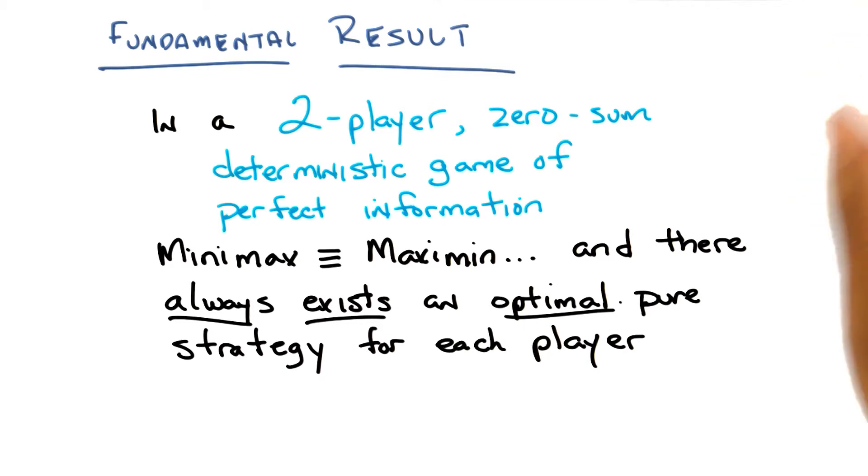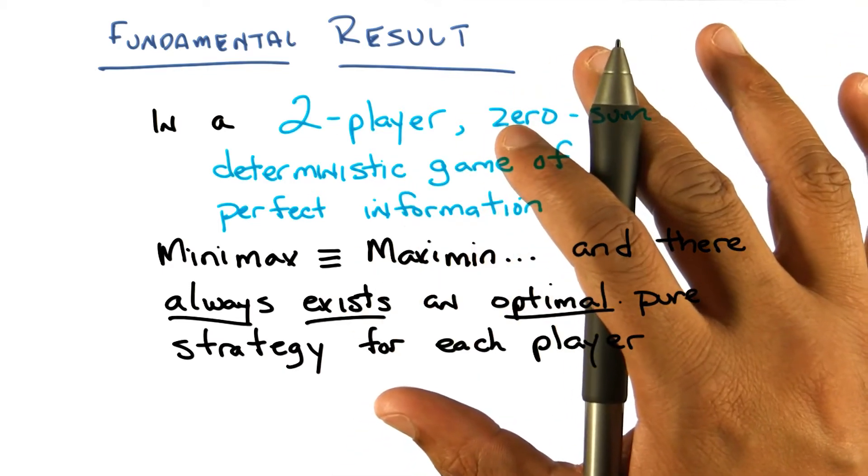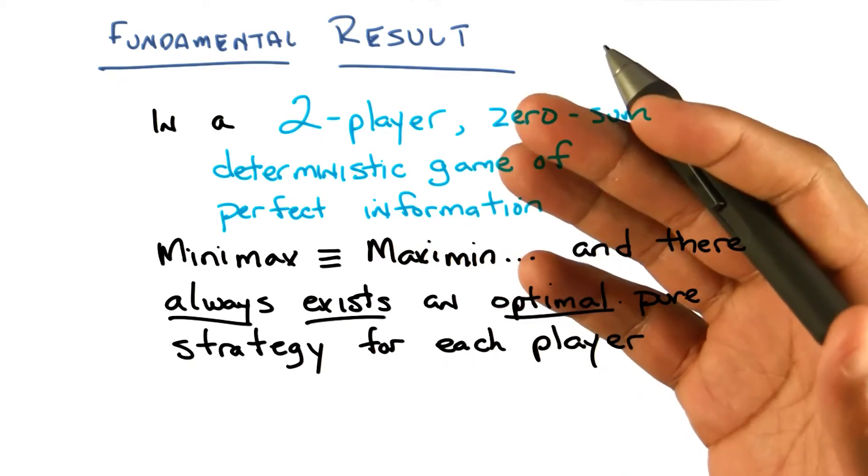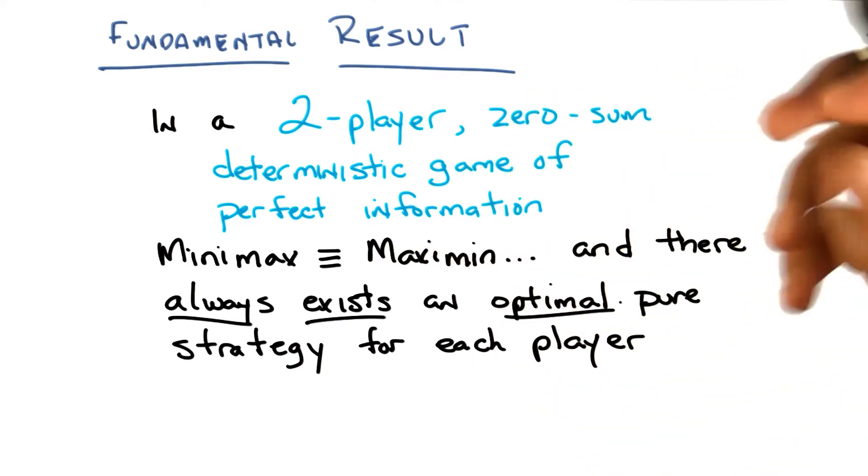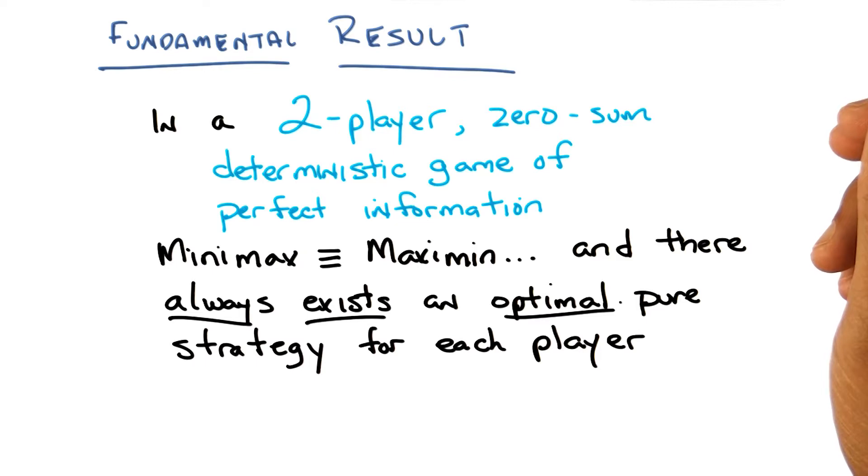And you know what the answer is. Once you write down the matrix, you just do minimax or you do maximin, and you end up with the proper answer. And now you know what the optimal players would do.